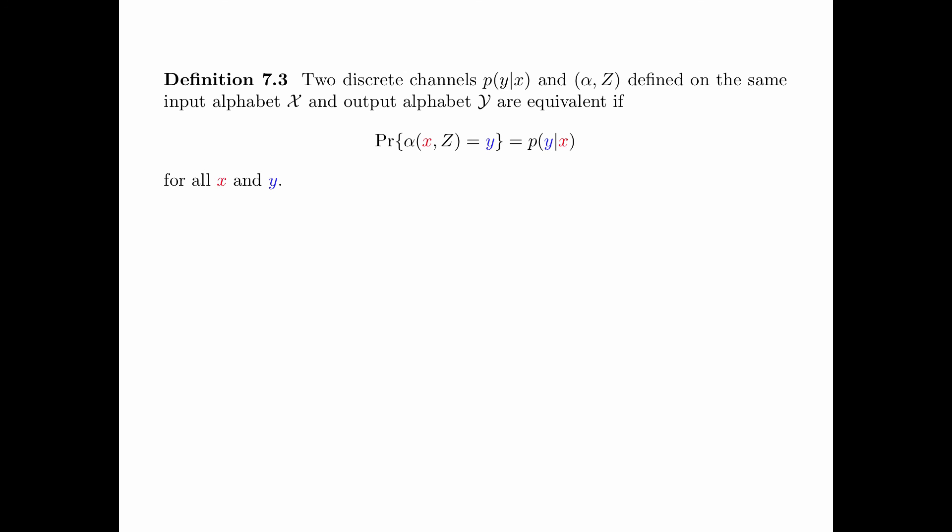Definition 7.3 is about the equivalence of two discrete channels — one specified as a discrete channel 1 and the other as a discrete channel 2. It states that two discrete channels P(y|x) and (alpha, z), defined on the same input alphabet x and output alphabet y, are equivalent if the probability that alpha of input x and noise variable z equals output symbol y is equal to P(y|x), for all x and y.